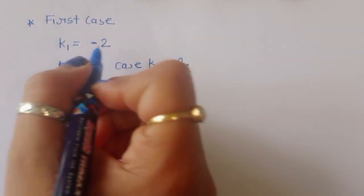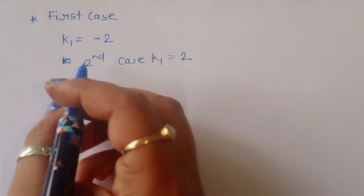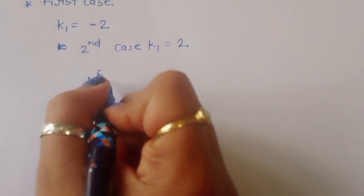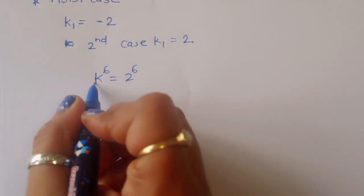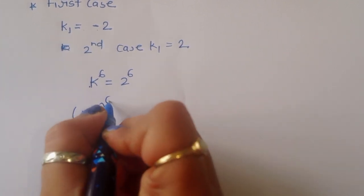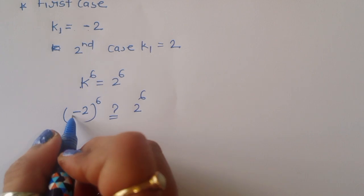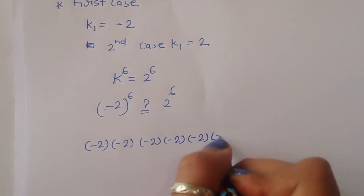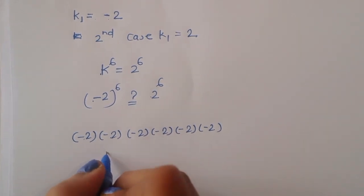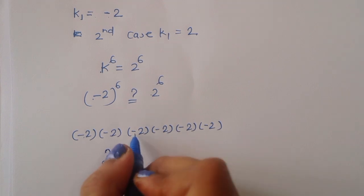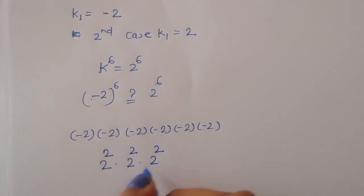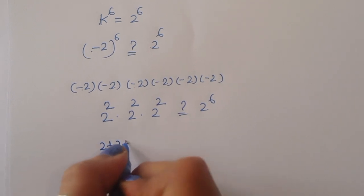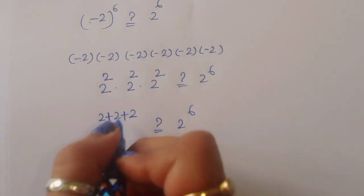Verification: In Case 1, k₁ equals minus 2, and in Case 2, k₁ equals 2. Verifying k equals minus 2: substituting into k power 6 equals 2 power 6, we get minus 2 power 6. Since minus 2 is multiplied by itself 6 times, the negatives cancel in pairs, giving 2 power 2 plus 2 plus 2, which equals 2 power 6. So LHS equals RHS.